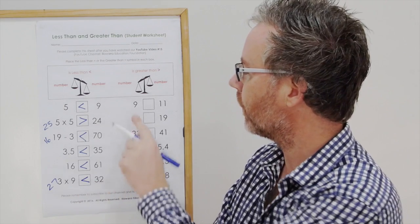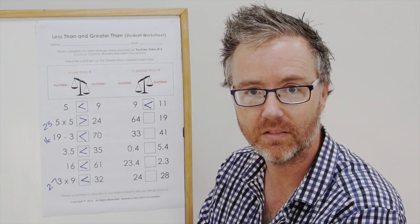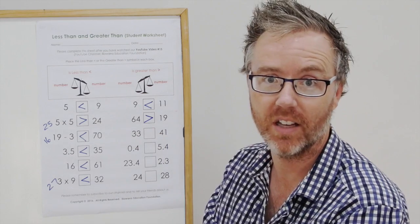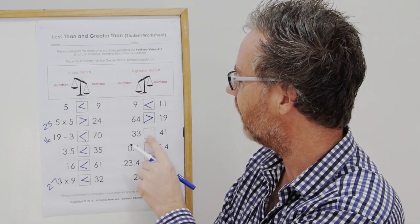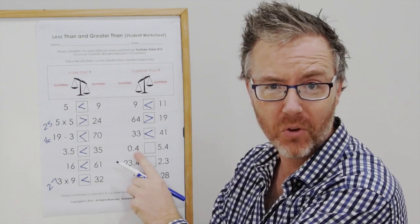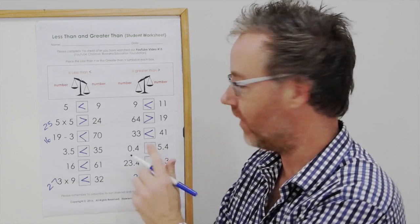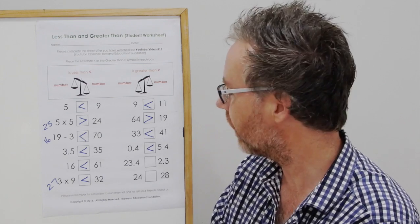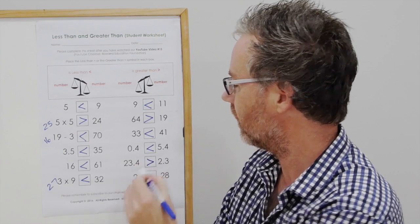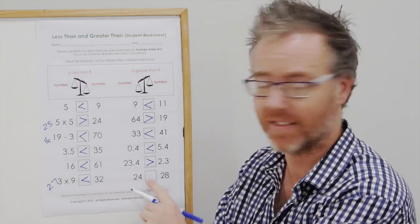How'd you go in the first column? Let's now go to the second column. 9, 11 - 9 is less than 11. 44, 34 is greater than 19. 33 less than 41, squashed L. 5 and 4 tenths, 4 tenths is less than 5, squashed L. 2 more to go. 23 and 4 tenths is greater than 2 and 3 tenths. Last one: 24, 28 - 24 is less than 28.